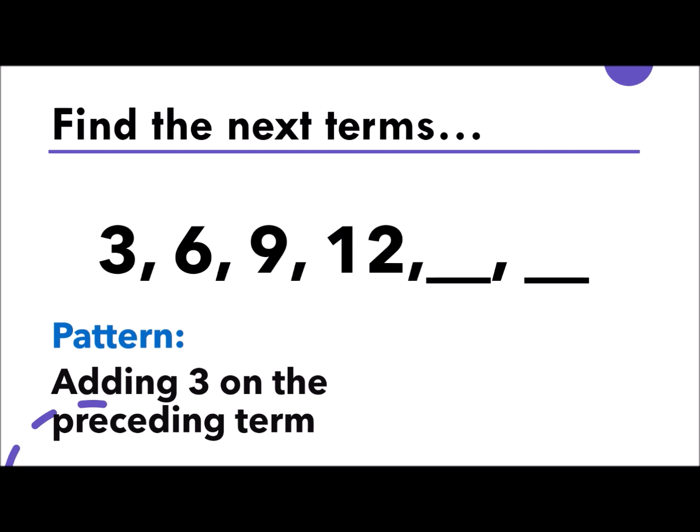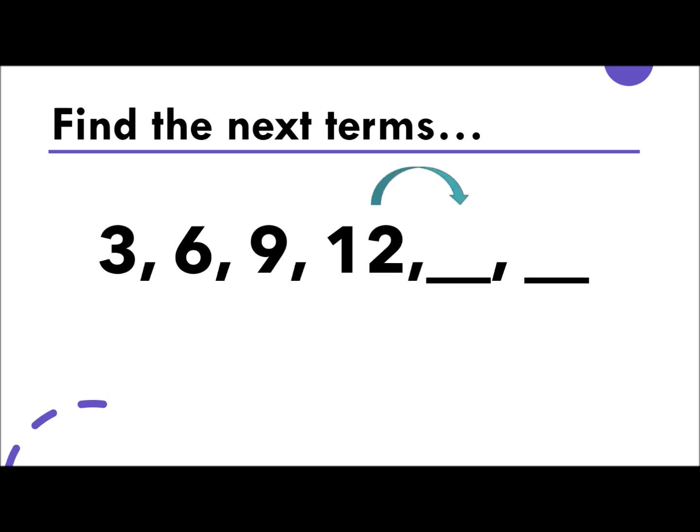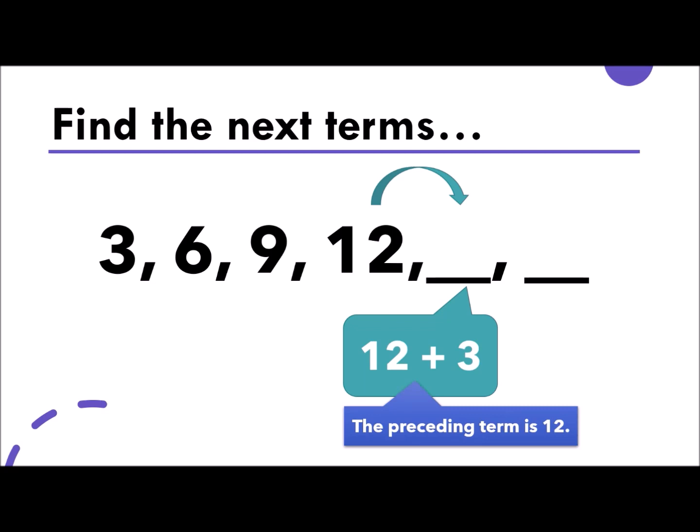Now, what is the preceding term? So, the preceding term of the first blank is 12. So, we need to add 3. So, that is 12 plus 3. Where in 12, again, is the preceding term. The answer is 15. For the next missing number, 15 will become the preceding term. Add again 3 because that is the pattern. So, the answer here is 18. So, that's how we find the next terms. We need to look for the pattern.